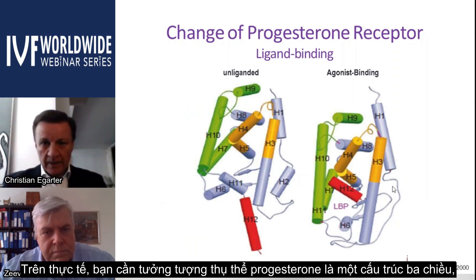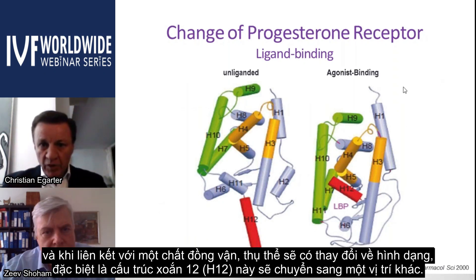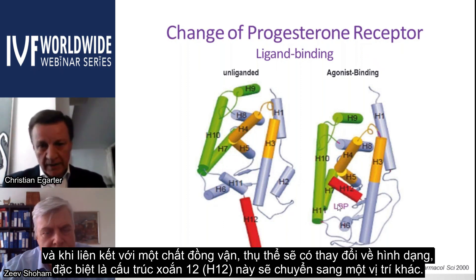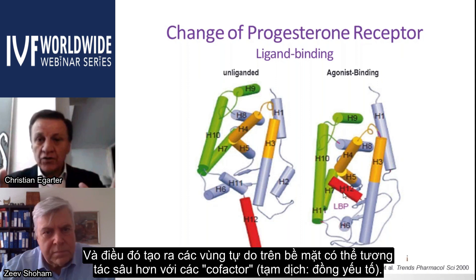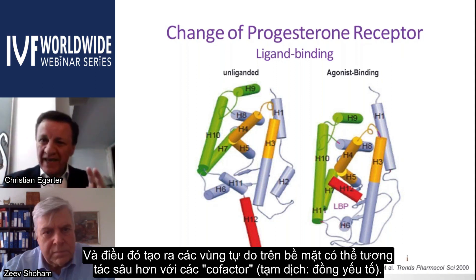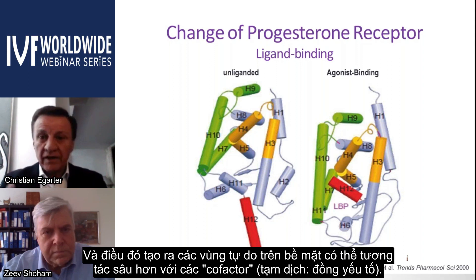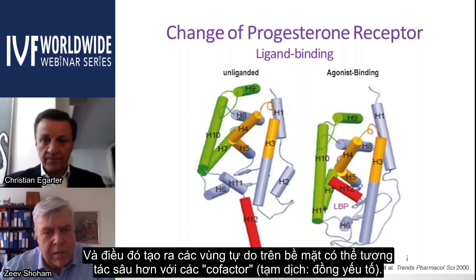The progesterone receptor must be imagined as a three-dimensional structure. Upon binding to an agonist, there is a conformational change — particularly helix 12 moves to a different position — leading to three areas on the surface that can further interact with so-called cofactors.